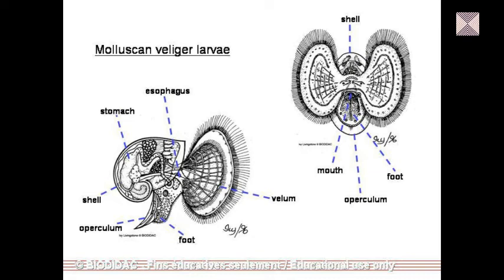This anterior shifting of the anus is comparable to the phenomenon known as torsion. During veliger larval development, torsion occurs, moving the anus from the hind end to the anterior side. The foot typically bears an operculum. Torsion is a very important phenomenon occurring in the veliger larva — you may encounter exam questions on what torsion is and how it occurs in different molluscs.